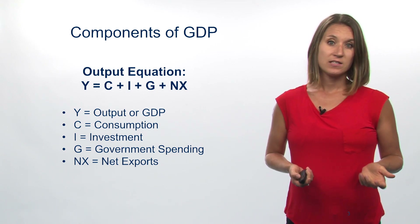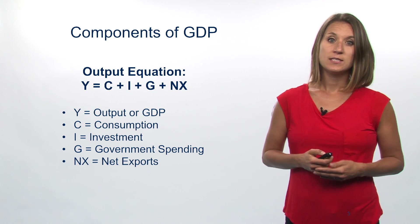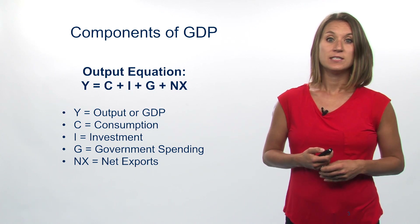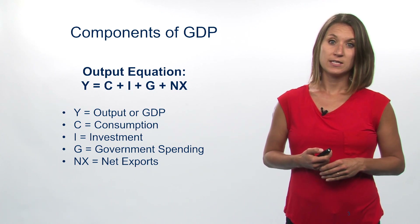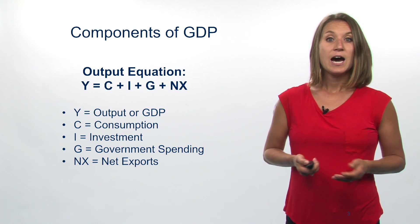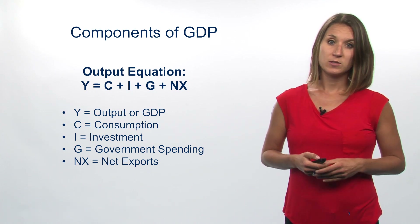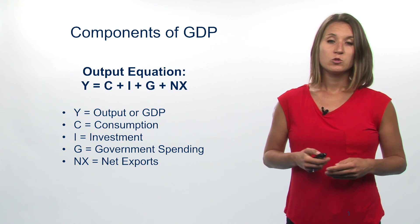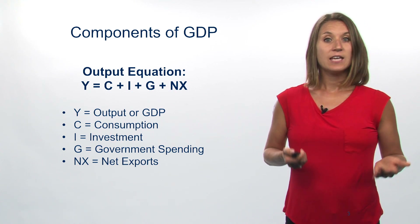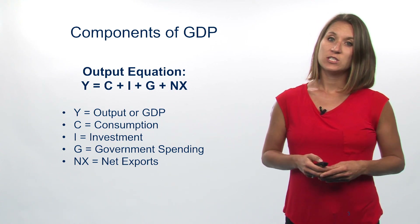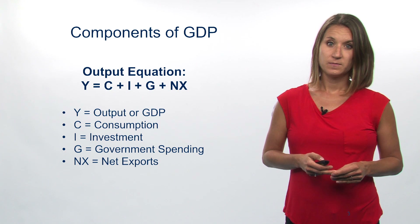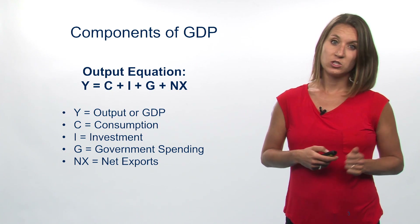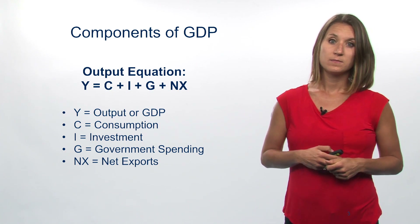On the other side of this equation, we have C, which represents consumption; I, which represents investment; G, which represents government spending; and NX, which is net exports. So let's go through each of these components. C + I + G + NX represents the expenditure side of the equation.